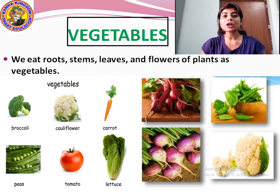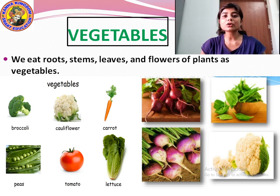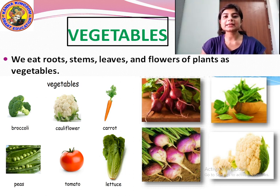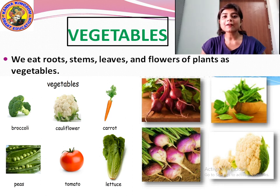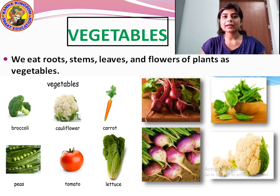Carrot is the root part of the plant. Radish, carrot and beet are all root parts. Potato and ginger are the stem of a plant. Broccoli and cauliflower are the flower part of the plant. Spinach and lettuce are the leaf of the plant that we eat as vegetable.